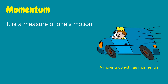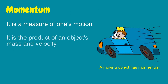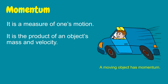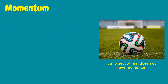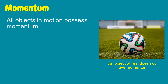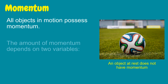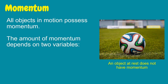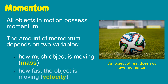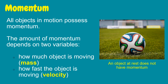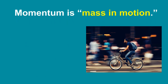Momentum is a measure of one's motion. It is the product of an object's mass and velocity. It is also known as translational momentum or linear momentum. All objects in motion possess momentum. The amount of momentum depends on two variables: how much the object is moving, which is mass, and how fast the object is moving, which is velocity. Therefore, we can say that momentum is mass in motion.